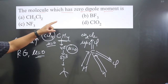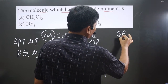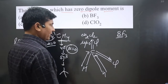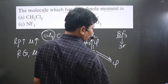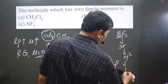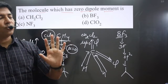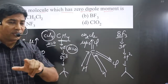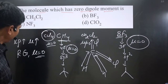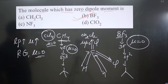Moving to option B: BF₃. Boron has three valence electrons and forms three bonds, giving three sigma bonds. Hybridization is sp² and geometry is trigonal planar — a regular geometry. Boron does not carry any lone pairs. Because it has regular geometry, dipole moment will be zero and BF₃ is completely nonpolar by nature. So option B is the answer.